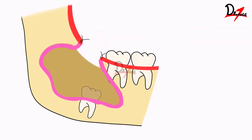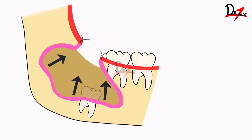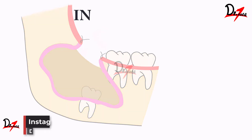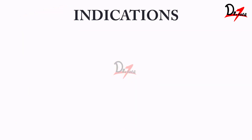You must know that a cyst grows by increased hydrostatic pressure. So when we do this procedure, we basically decrease the pressure so that bone growth can happen. We also leave the cavity open during that time — we keep the pouch open during bone regeneration.